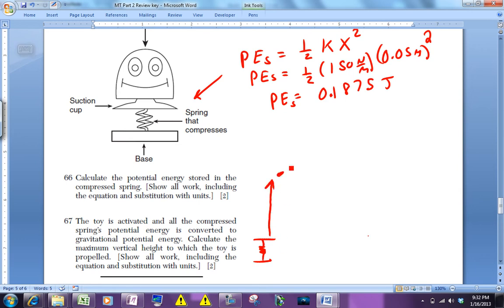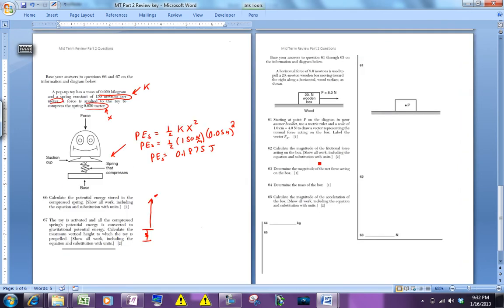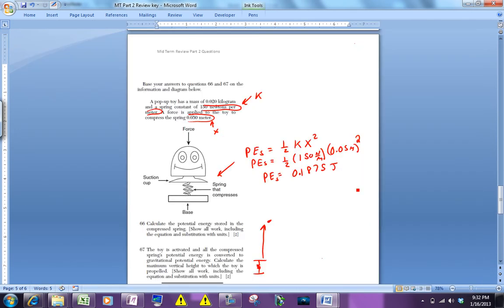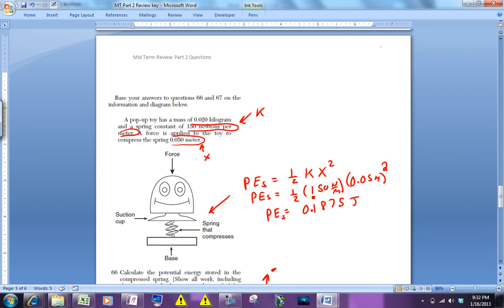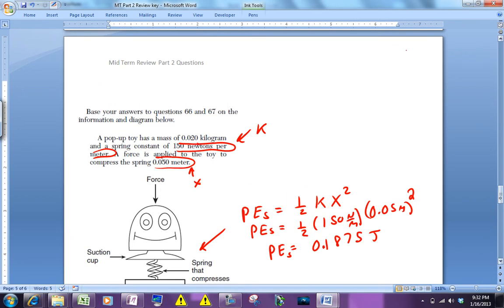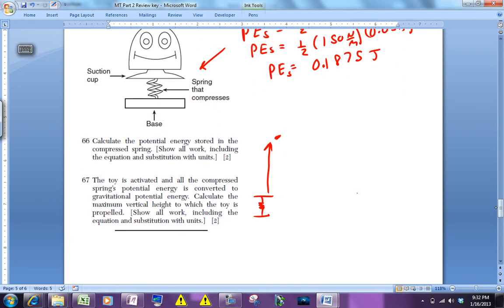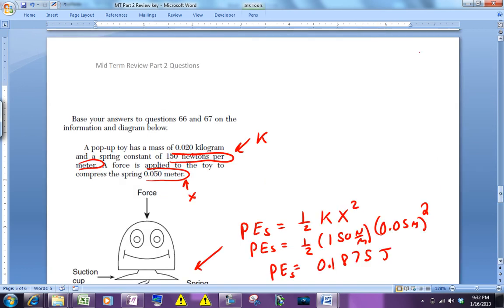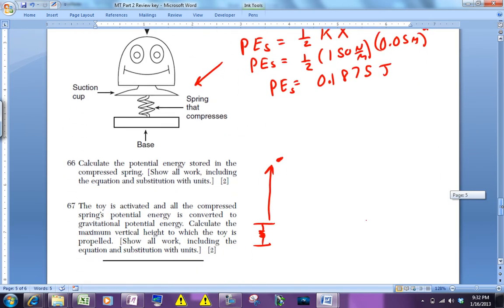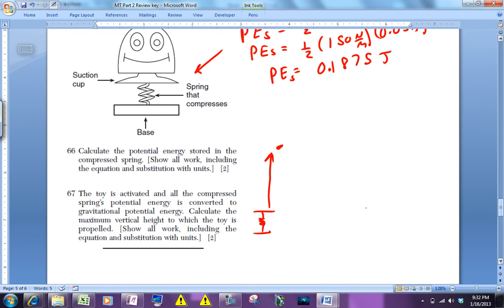how high is it? What we're going to assume there is that all of the potential energy that was in the spring is going to go into the gravitational potential energy at the top. Now in reality you might lose some due to drag and noise and internal energy, but we're going to assume that it all goes into the spring. So what we're saying is that the total mechanical energy before equals the total mechanical energy after.